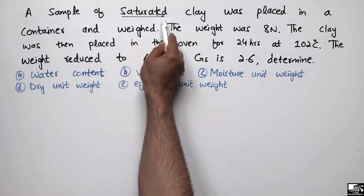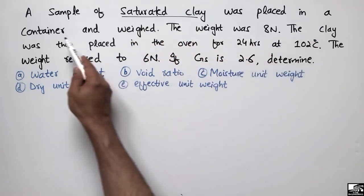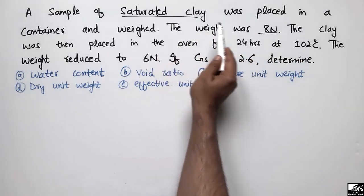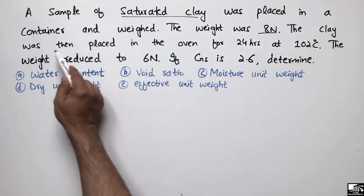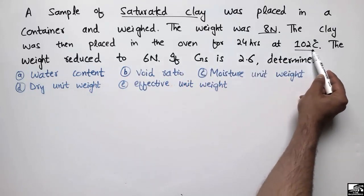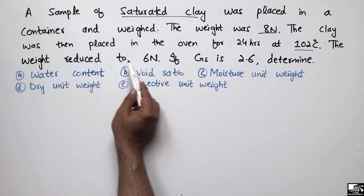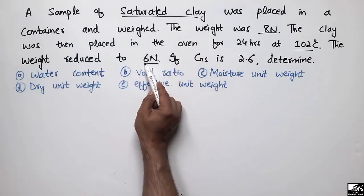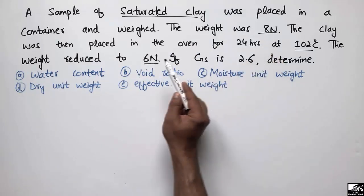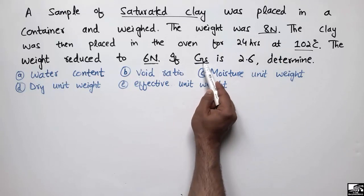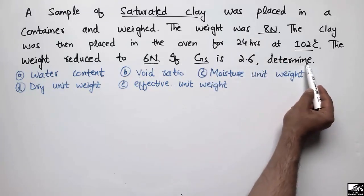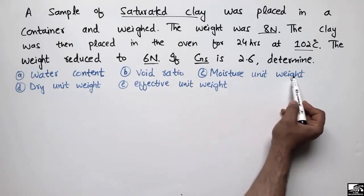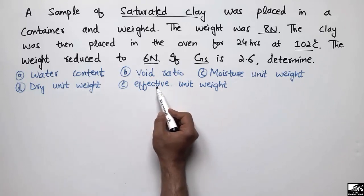This problem states that a sample of saturated clay was placed in a container. The weight of the saturated clay was 8 Newtons. The clay was then placed in an oven for 24 hours at a temperature of 102°C. The weight reduced to 6 Newtons after drying. The specific gravity Gs is 2.6. We need to determine the water content, void ratio, moisture unit weight, dry unit weight, and effective unit weight.